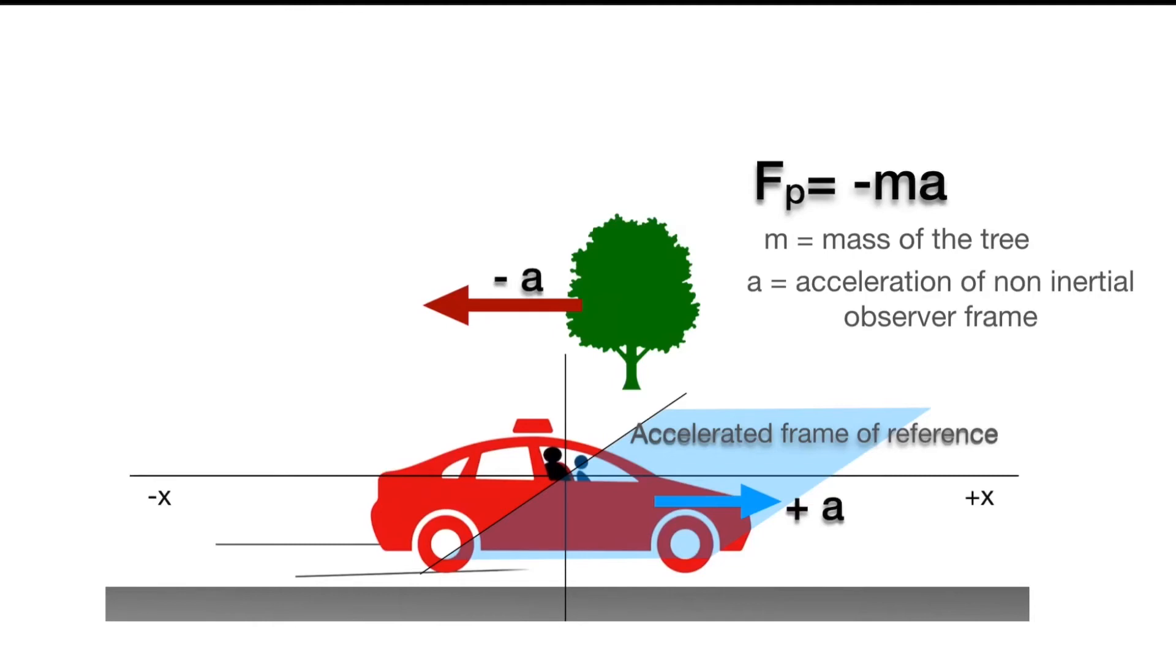As in this case the Fp is equal to minus ma, and this Fp is a pseudo force or imaginary force which explains the motion of this tree.